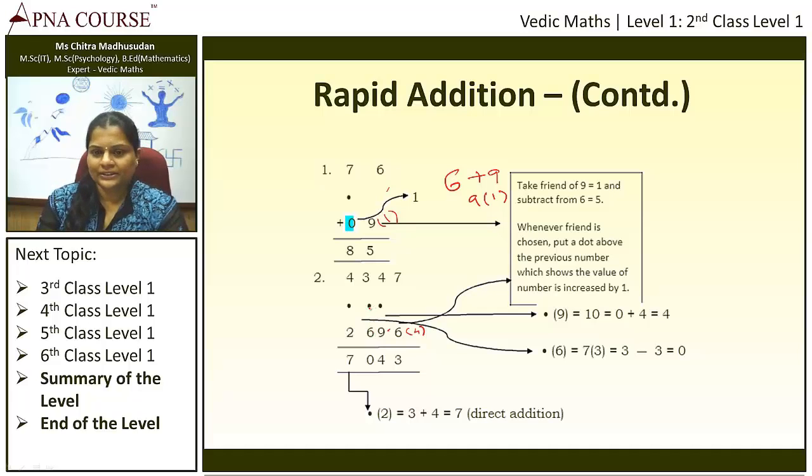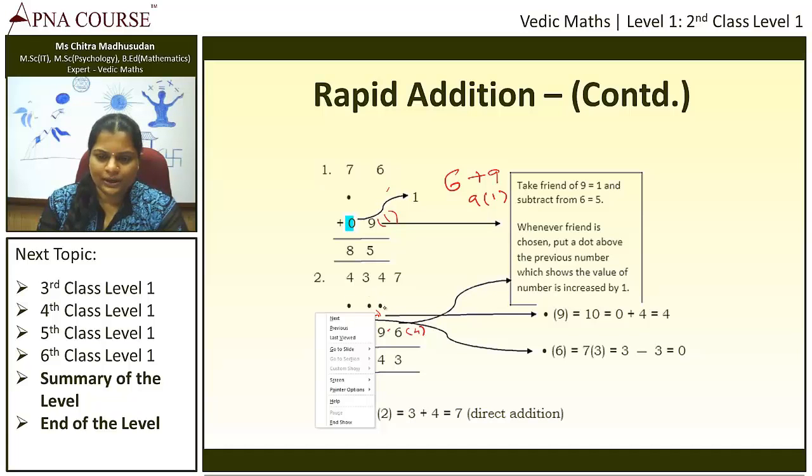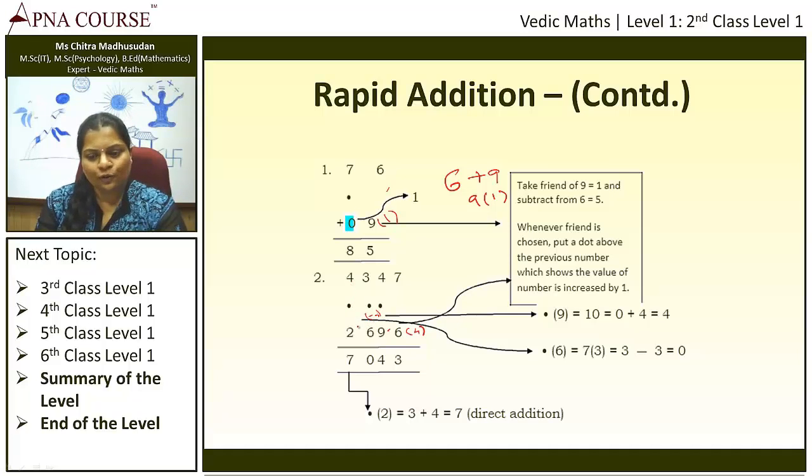And since it has become 7, so 7's friend is 3. You can write it here if you want, minus 3. So 3 minus 3 will become 0. And again, since I have taken friend here, so 2 will become 3. So 4 plus 3, direct addition is possible. No need of friend here. 4 plus 3 is 7. So 4347 plus 2696 is equal to 7043.